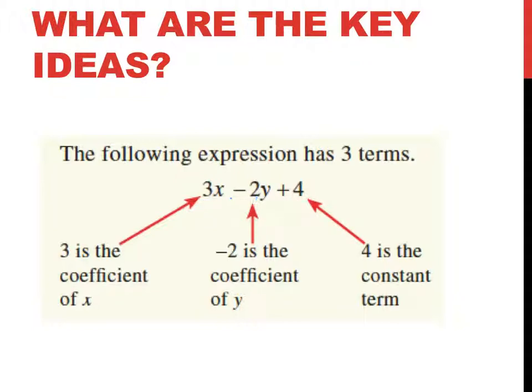The constant term in this expression here is 4. Now, what makes this whole thing an expression? Well, you've got three terms: 3x, negative 2y, and 4. There is no equal sign. And they're all joined by operations.